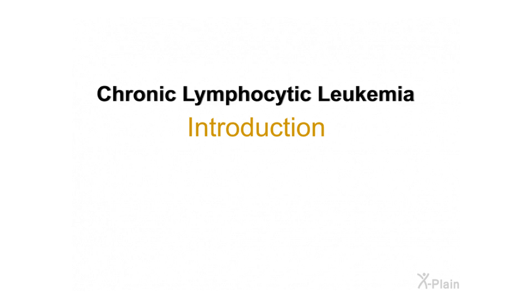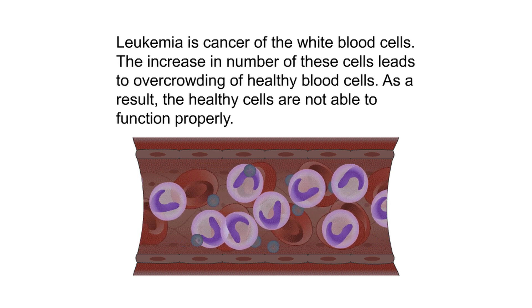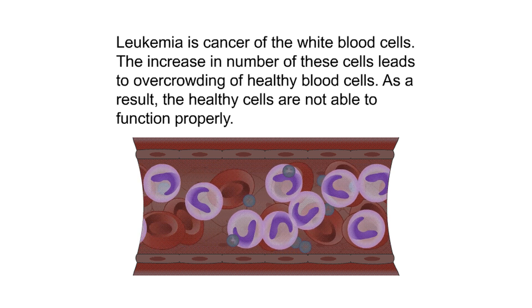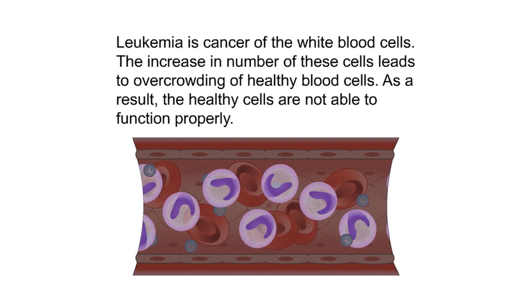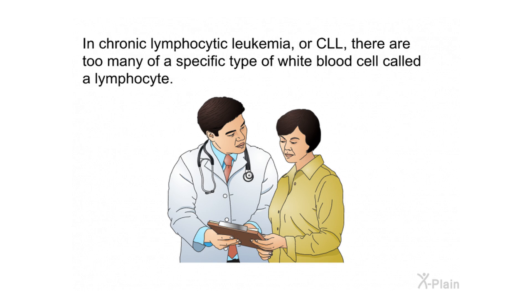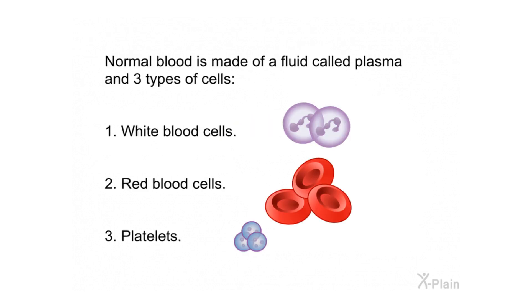Leukemia is cancer of the white blood cells. The increase in number of these cells leads to overcrowding of healthy blood cells. As a result, the healthy cells are not able to function properly. In chronic lymphocytic leukemia, or CLL, there are too many of a specific type of white blood cell called a lymphocyte. This program explains chronic lymphocytic leukemia, covering its causes, symptoms, diagnosis, and treatment options.